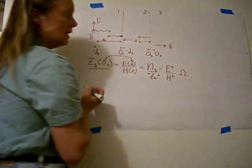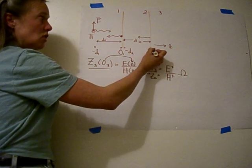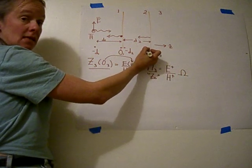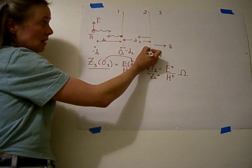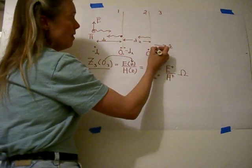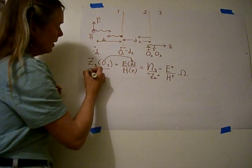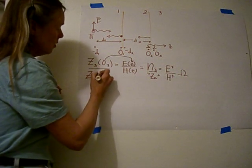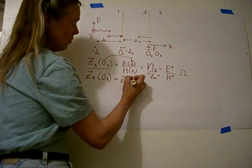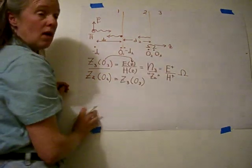Now here's a trick. If we have the ratio of electric and magnetic fields here, the ratio of the fields has to be exactly the same here — because if it wasn't, then there would be sparks and flame. So we can say that the ohms cross this boundary. Therefore, z2 at O2 is equal to z3 at O3. The ohms cross the boundary.